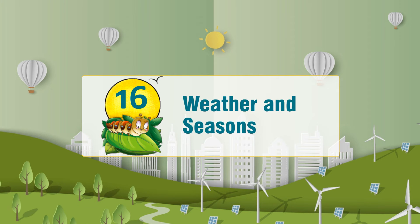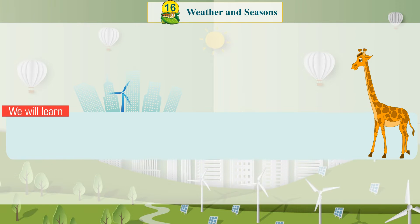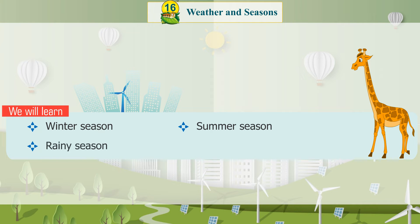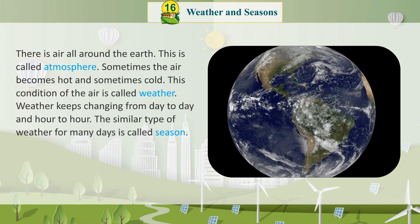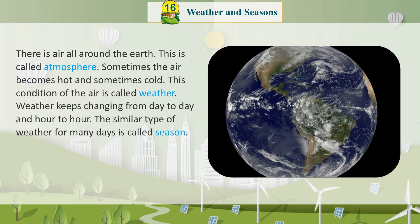Chapter 16: Weather and Seasons. We will learn about Winter Season, Summer Season, Rainy Season, Spring Season and Autumn Season.